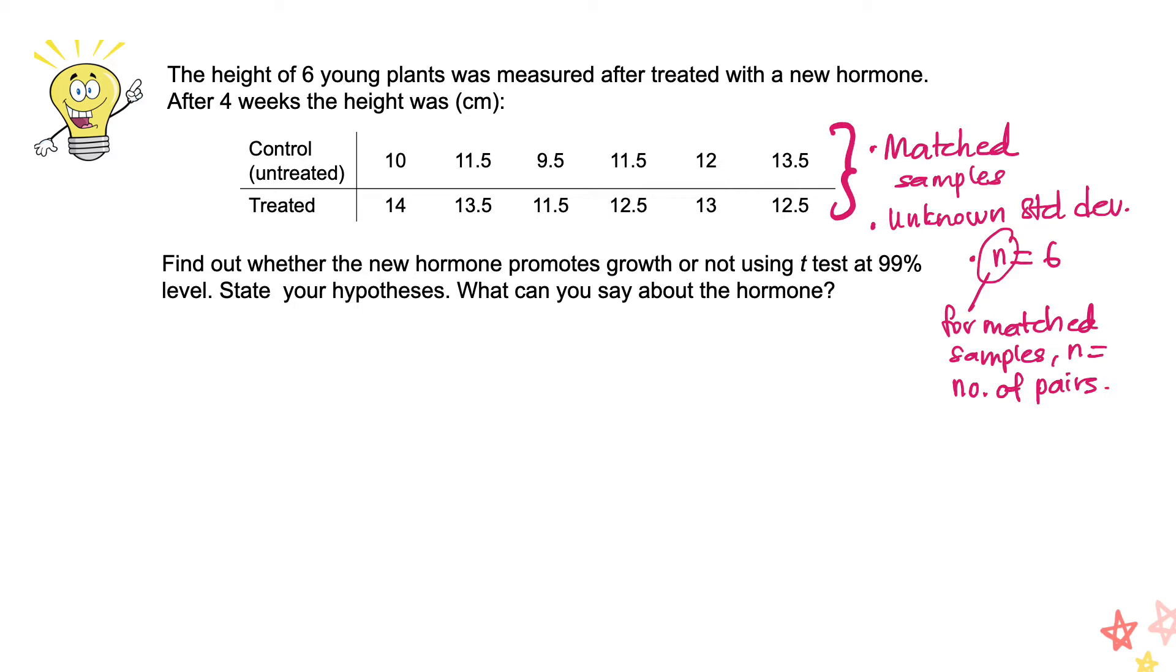In this case, the n value is six. And we know that alpha value is one percent since the confidence level given here is 99 percent. So those are the information that we know about this problem.